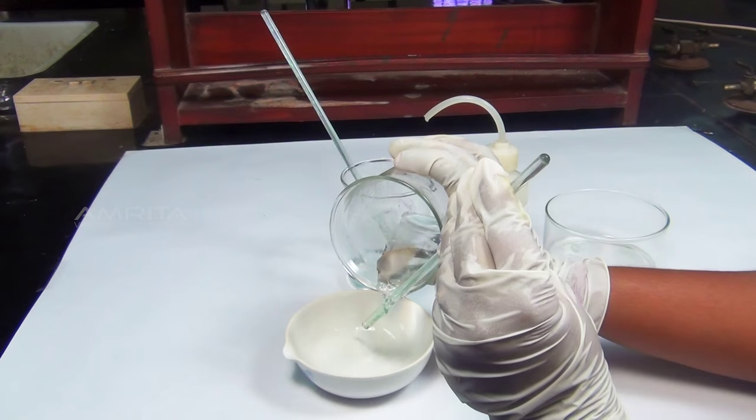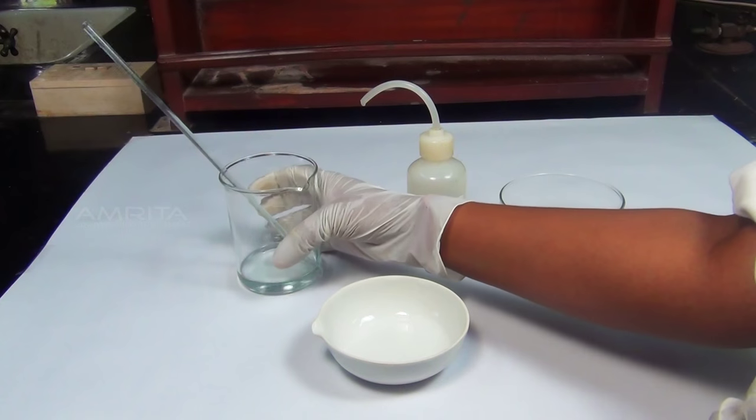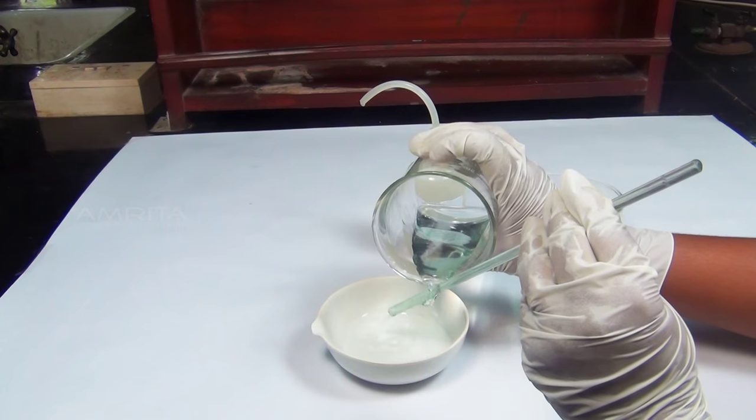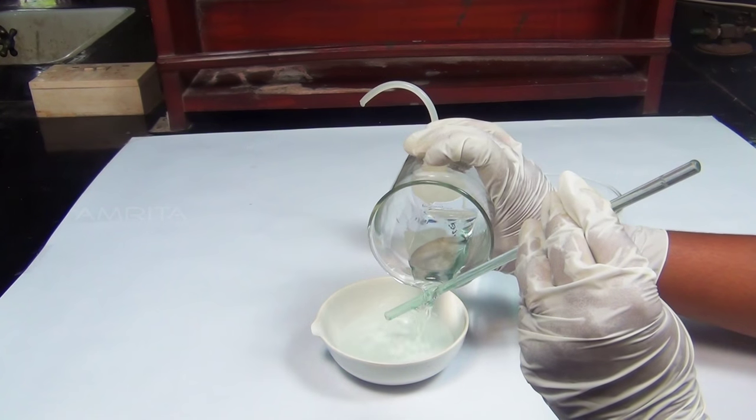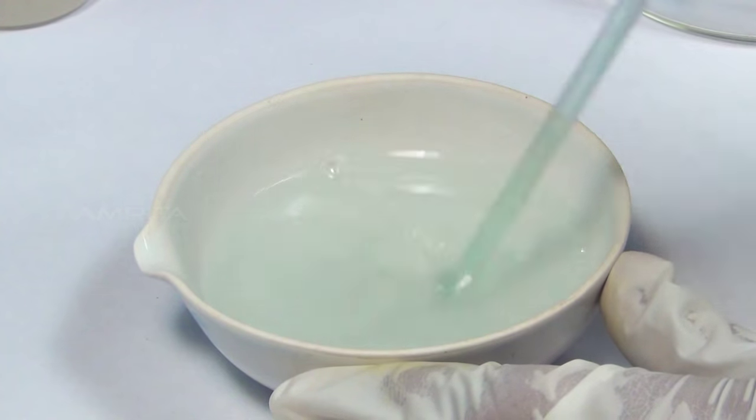Now, transfer the potassium sulphate solution into the china dish. Then, transfer the aluminium sulphate solution into the same china dish. Mix the two solutions in the china dish using a glass rod.